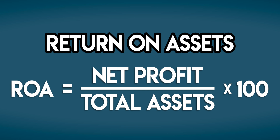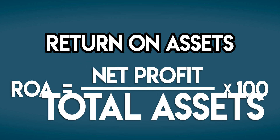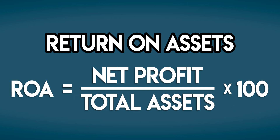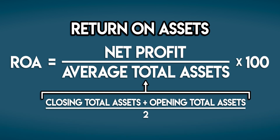But hang on, there's a problem here. Net profit is the bottom line financial gain generated over a period of time, whereas total assets are the stuff that a business owns at a point in time. To compare like with like, we can use average total assets, which equals closing total assets plus opening total assets divided by two.